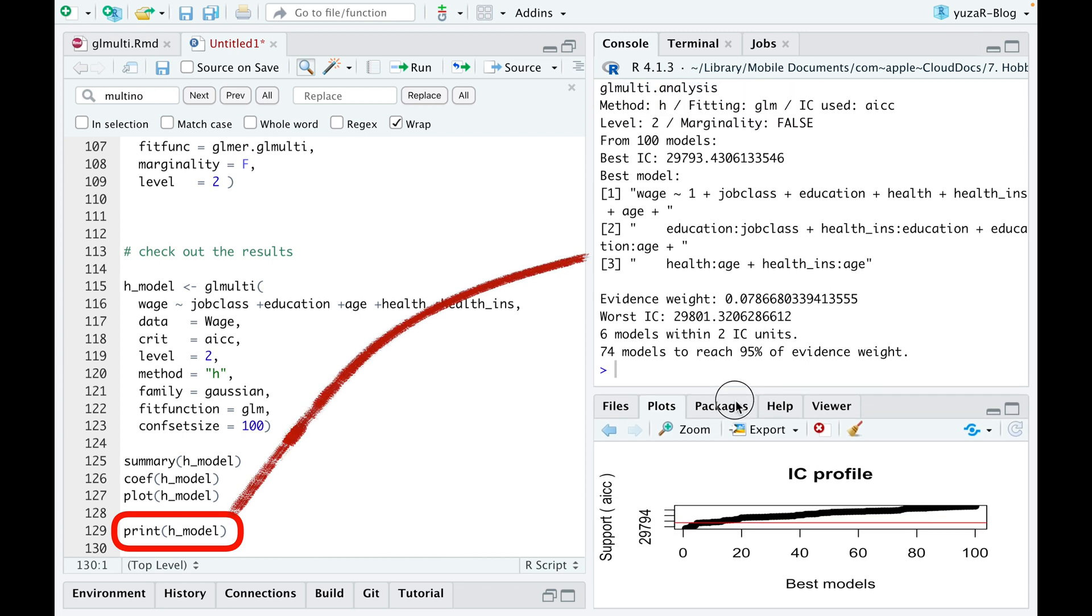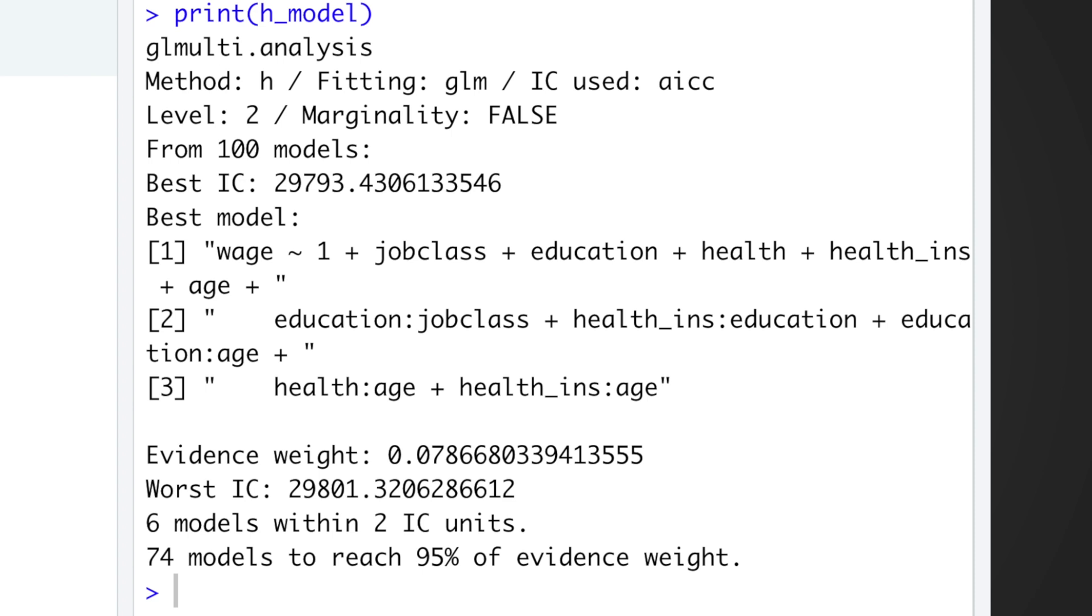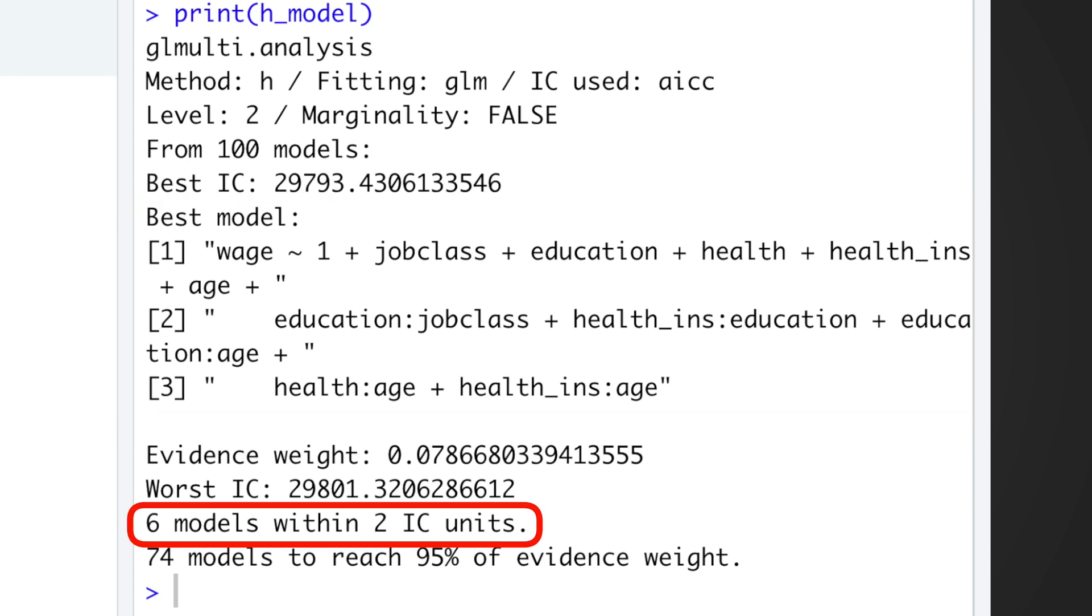But let's start with a brief summary of the results, which can be obtained via the print command, where we see the most important information, such as fitting function, the information criteria used to rank the models, the formula of the best model, and even the number of models which are as good as the best model.